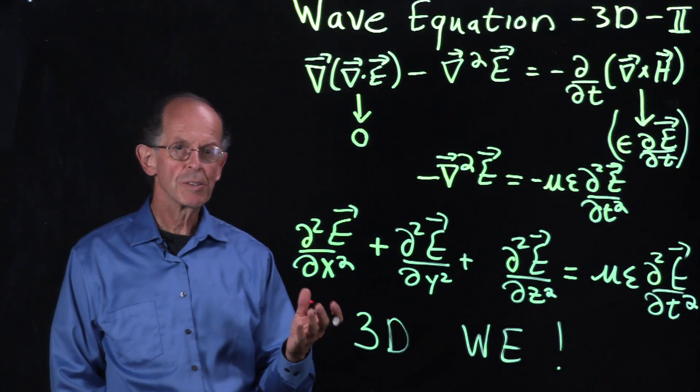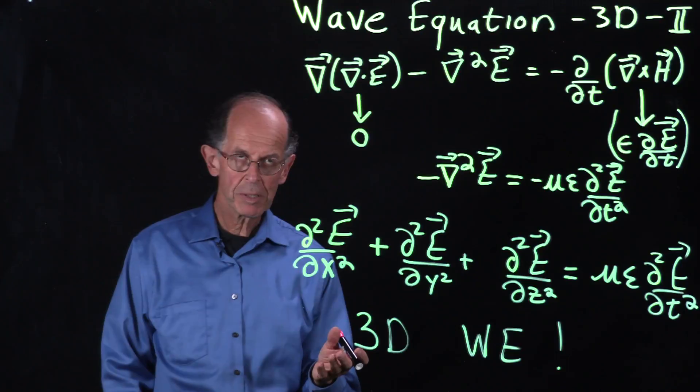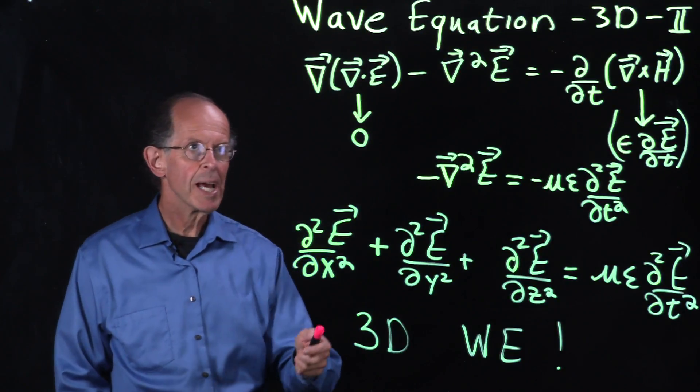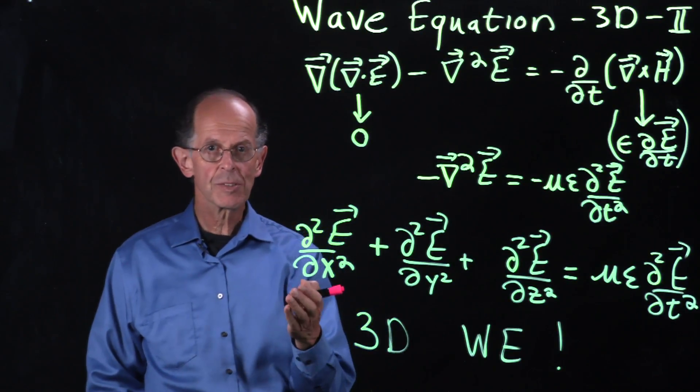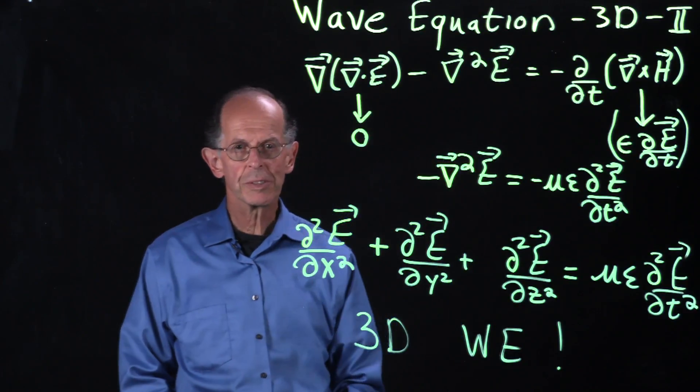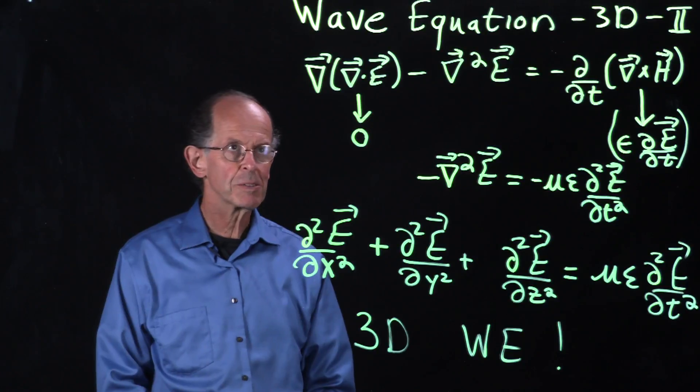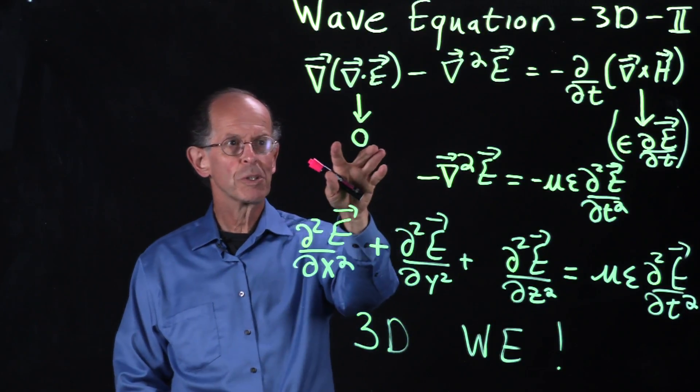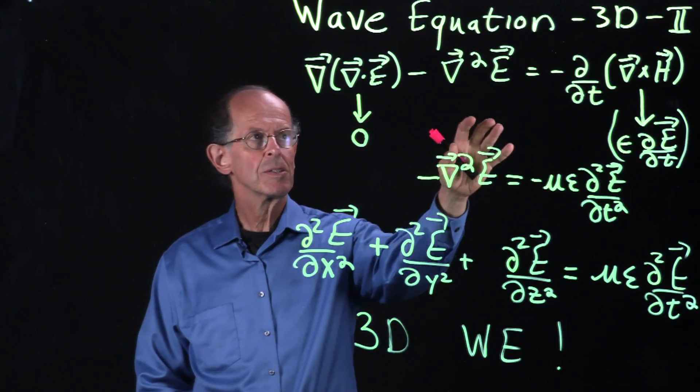Let's continue our discussion of the Maxwell wave equation. We had from the left-hand side the curl of the curl of E, this expression which you can look up in the appendix. It's a vector identity. It has two terms, this term and this term.